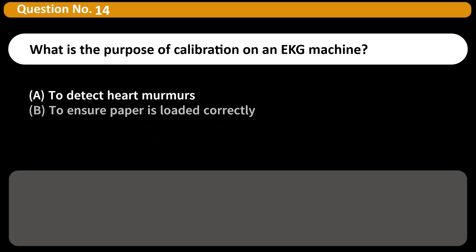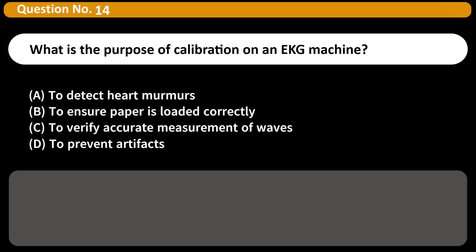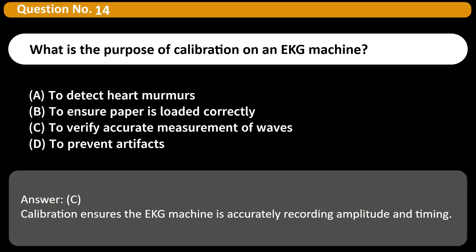What is the purpose of calibration on an EKG machine? A. To detect heart murmurs B. To ensure paper is loaded correctly C. To verify accurate measurement of waves D. To prevent artifacts Answer C. Calibration ensures the EKG machine is accurately recording amplitude and timing.